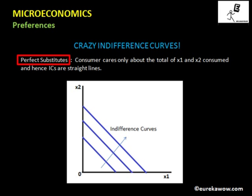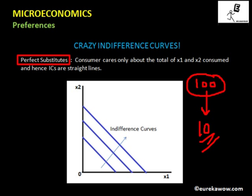Suppose the income of the consumer is 100 and one bottle of Coca-Cola and one bottle of Pepsi both cost 10, then the consumer can easily substitute one Coca-Cola with one Pepsi or vice versa. From this income of 100, the consumer will be able to buy 10 bottles in total, either of Coca-Cola or Pepsi, and won't be interested in whether he is consuming Coca-Cola or Pepsi. As a result, the indifference curves are straight lines.